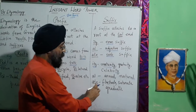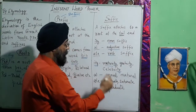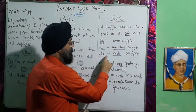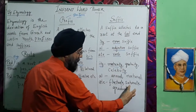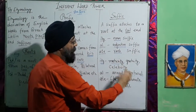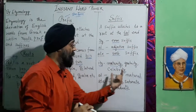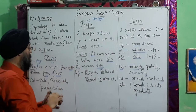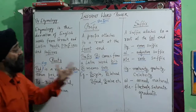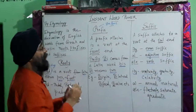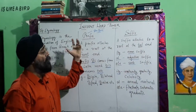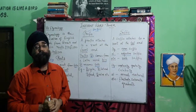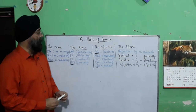The suffix '-ate' gives us verb suffix words such as fluctuate, saturate, and graduate. So, to summarize: suffix is the tail-end addition to a base word; prefix is the beginning addition before the word; and the root is the base that helps you build your vocabulary. This is how you can instantly learn and use words as early as possible.